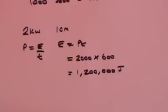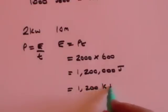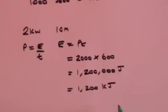times the time which is ten minutes that's six hundred seconds so that is going to be one million two hundred thousand joules. So putting my two kilowatt fire on for ten minutes I use one million two hundred thousand joules or you could write that as one thousand two hundred kilojoules because a K represents the thousand but either way that sounds an awful lot.